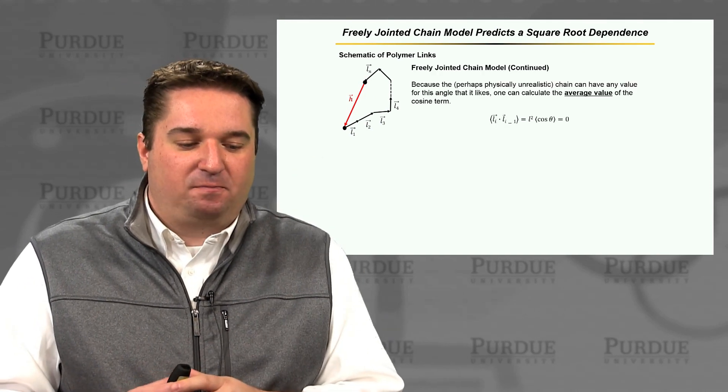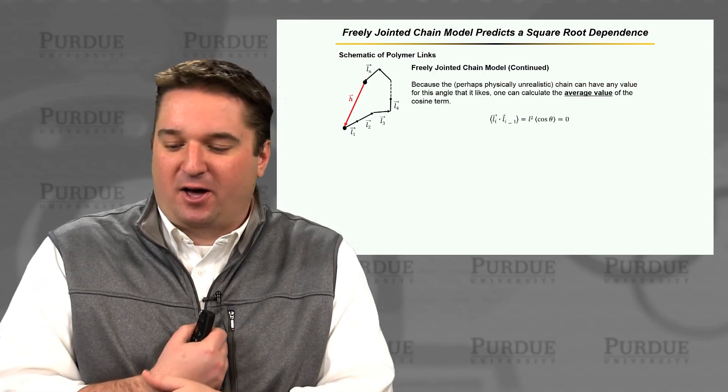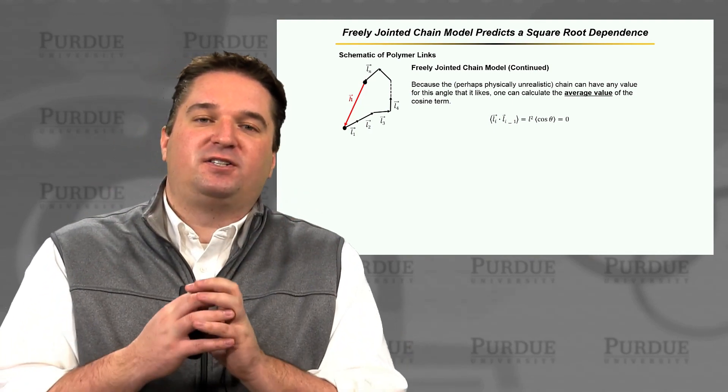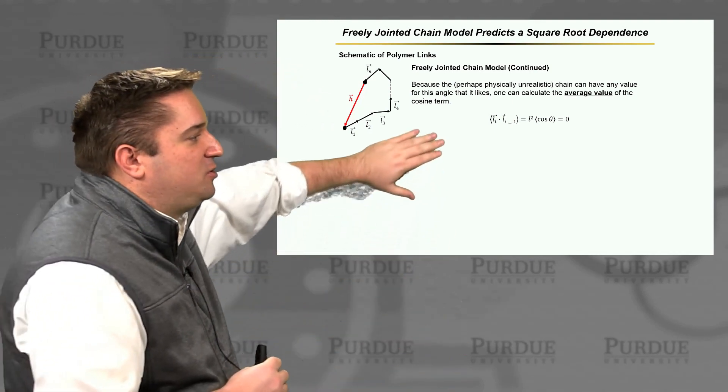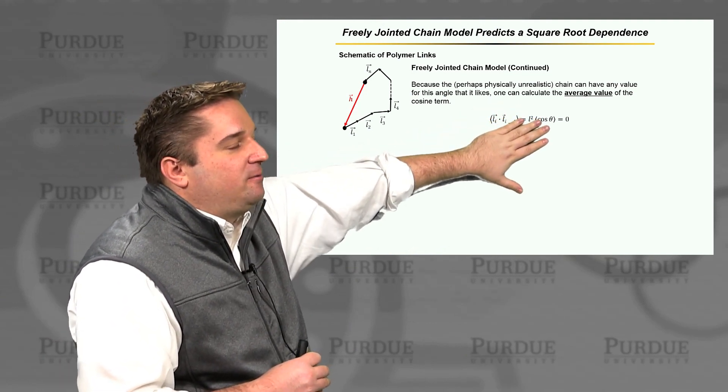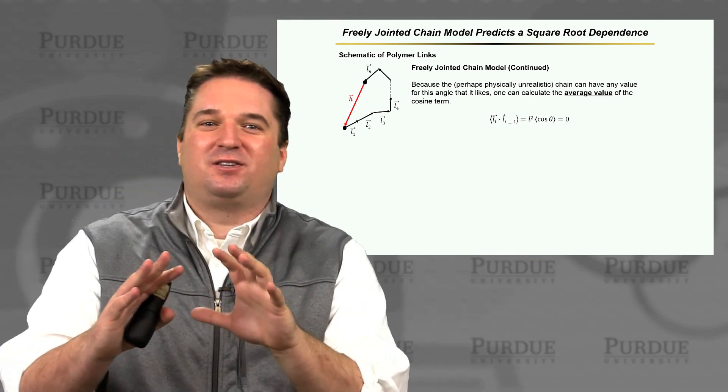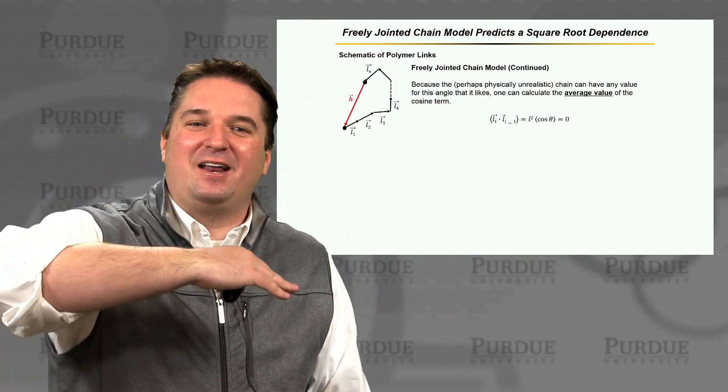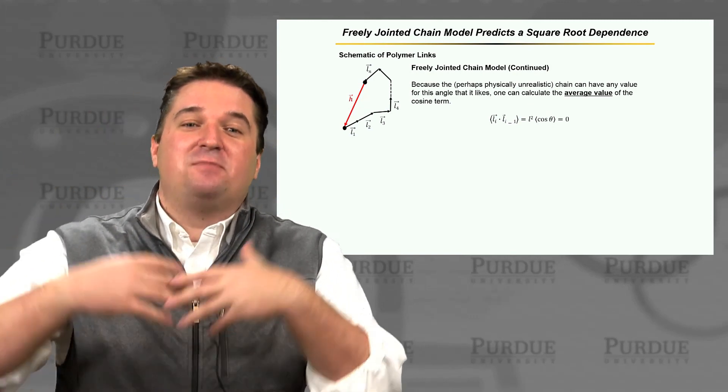So here's our chain model again. And if we do this, we can think about the idea that if we dot this over all space, then if we take the average there, this is just going to be L squared times the average value of cosine theta. But I just told you that this cosine theta term, this angle can be anything. It can be all the way from 180 degrees to zero degrees. And it can be anything.